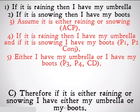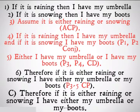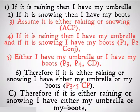Based on this conditional proof — based on that assumption and that conclusion — I can get: therefore, if it is raining or snowing, I either have my umbrella or my boots, because I assumed the first part and I was able to conclude the second.